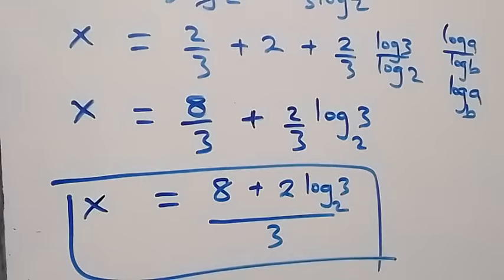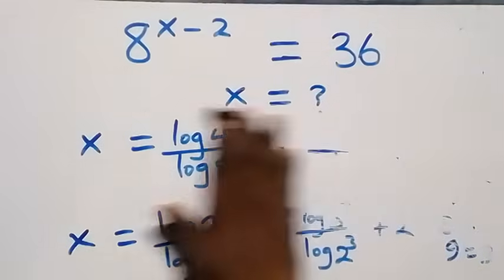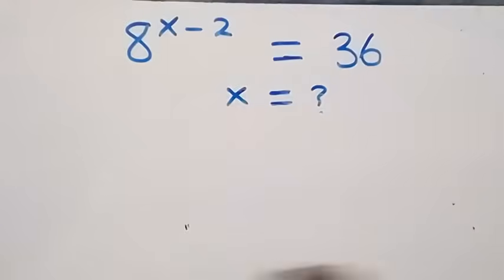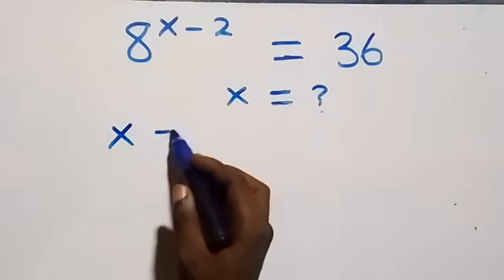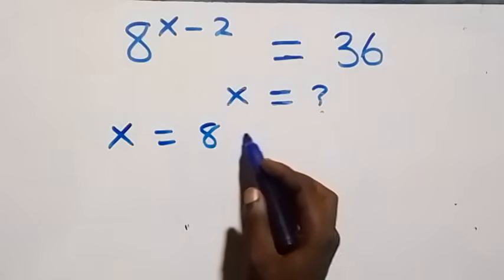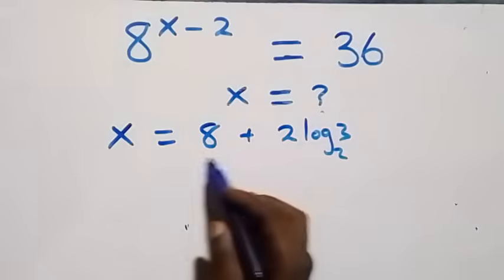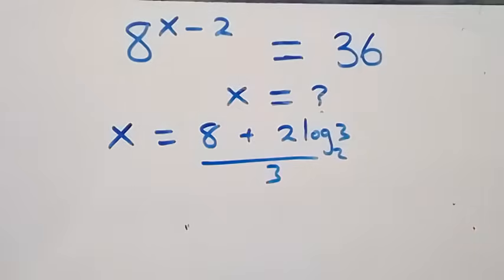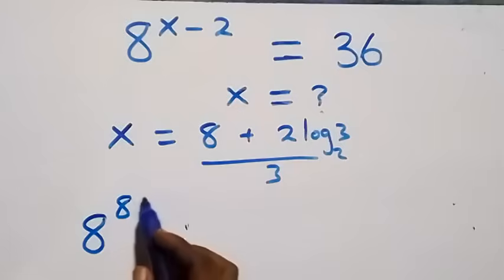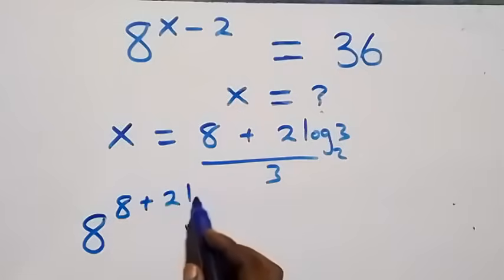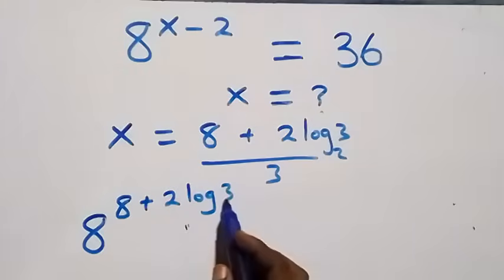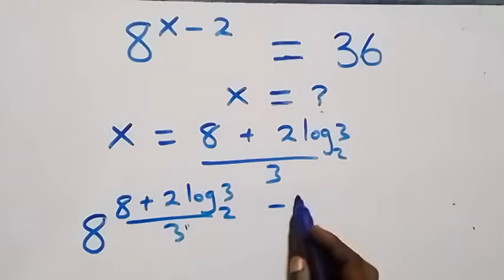So we have the value of x as 8 plus 2 log 3 base 2, all over 3. Now let's check if this satisfies the given problem. We substitute x equals 8 plus 2 log 3 base 2 over 3, giving us 8 raised to power (8 plus 2 log 3 base 2 over 3) minus 2, which should equal 36.